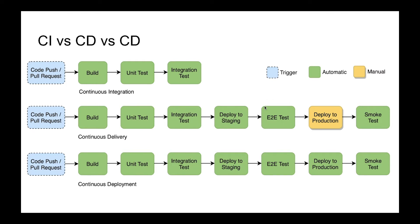Then we run end-to-end tests. We run them after deploying to staging because first of all we need the environment where these tests can run — the test runner should open the browser and run all these tests, and it takes a lot of time, it can take 10 to 12 hours. If we run these tests in the continuous integration phase, we may never finish, because CI can be run hundreds or thousands of times a day and end-to-end tests take a lot of time. So we deploy to staging and after that we can deploy to production.